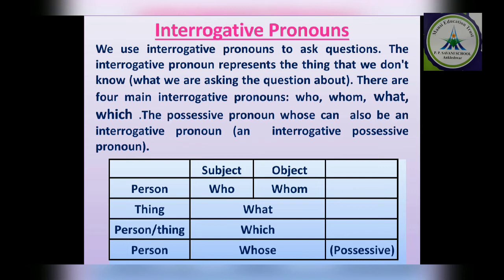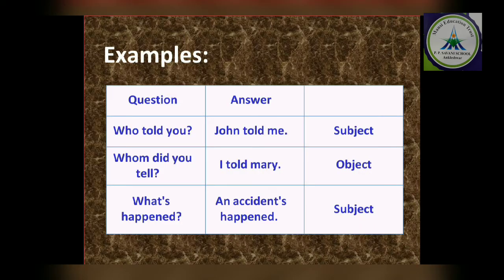Now comes the interrogative pronoun — very easy. The pronoun which is asking a question is known as an interrogative pronoun. We use interrogative pronouns to ask questions; they represent the thing we don't know. Mainly there are four interrogative pronouns: who, whom, what, which. If these words appear in a sentence and are asking a question, it becomes an interrogative pronoun. For example: 'Who told you?', 'Whom did you tell?', 'What happened?' — these all become interrogative pronouns.